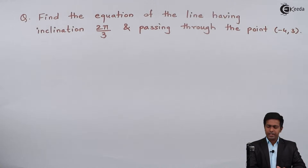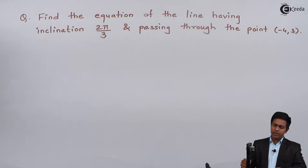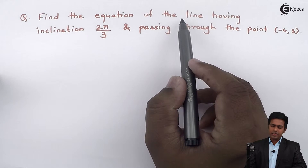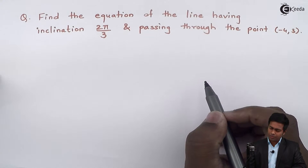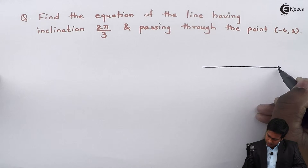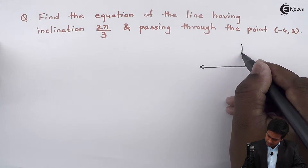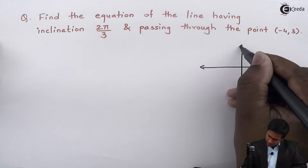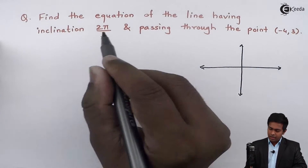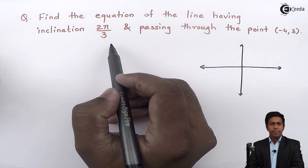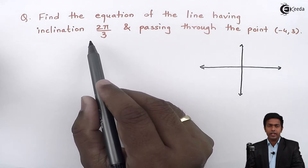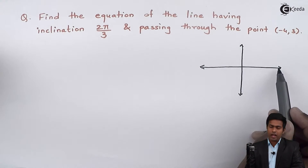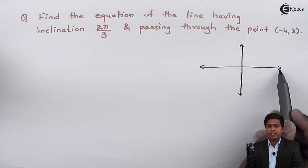Before finding the equation of the line, let's visualize how this line would look. As given, this line is making an inclination of 2π/3 with the positive direction of the x-axis. So if this is the x-axis and this is the y-axis, then it is making an angle of 2π/3, which is nothing but 120 degrees. So the line is making an angle of 120 degrees with the positive direction of the x-axis.